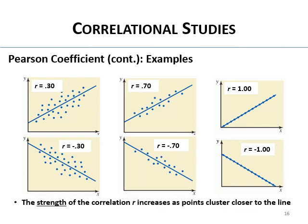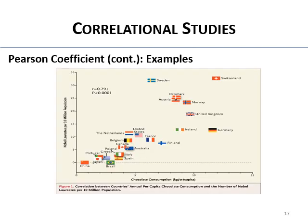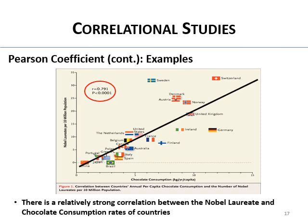Here's a real-world example: on the y-axis is the rate-adjusted number of Nobel laureates per 10 million population; on the x-axis is chocolate consumption in kilograms per year per country. Countries with higher chocolate consumption tend to have more Nobel laureates per population. The correlation coefficient is 0.79, which is statistically significant — a relatively strong positive correlation. This is one of those goofy but real correlations between chocolate consumption and Nobel laureate rates.